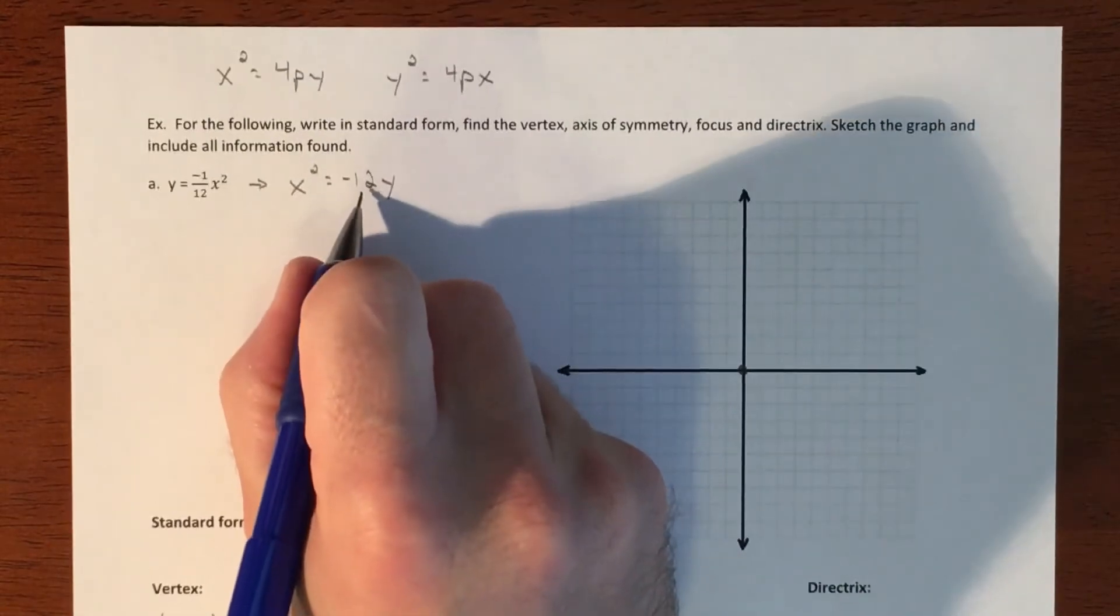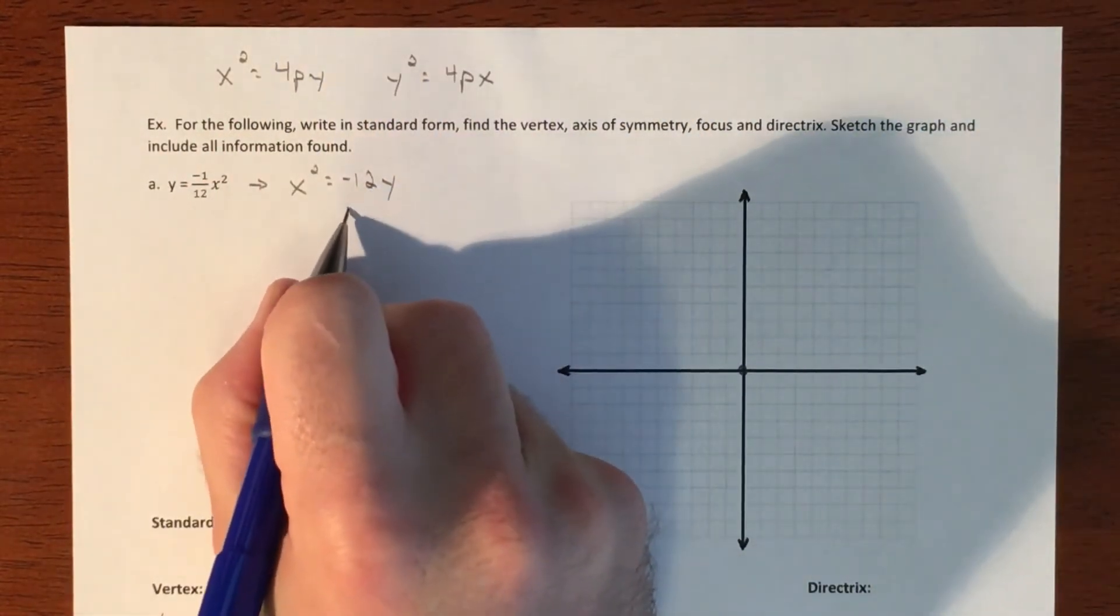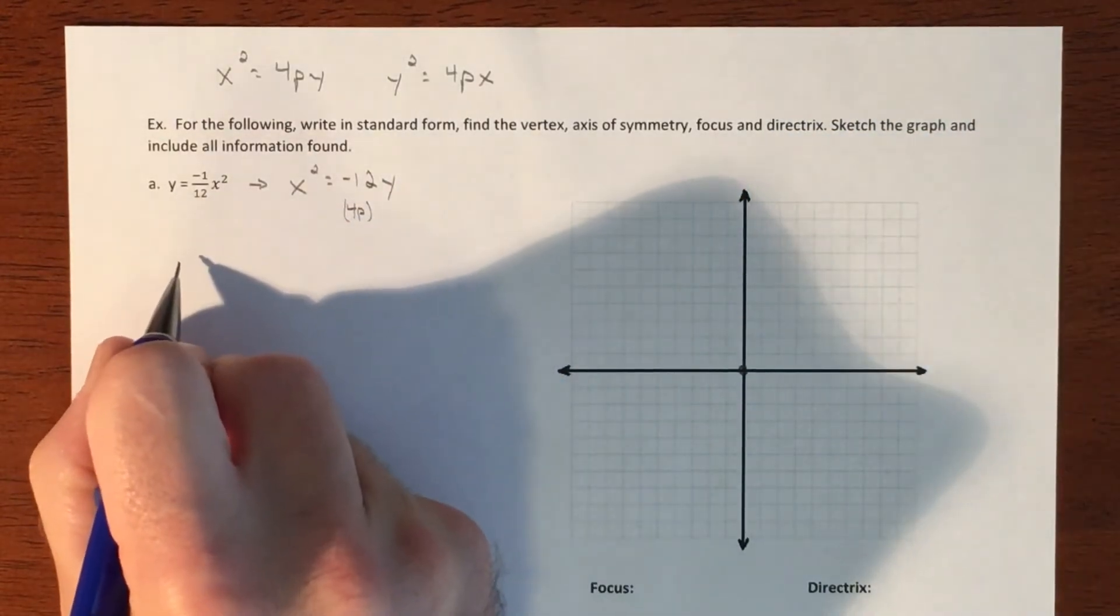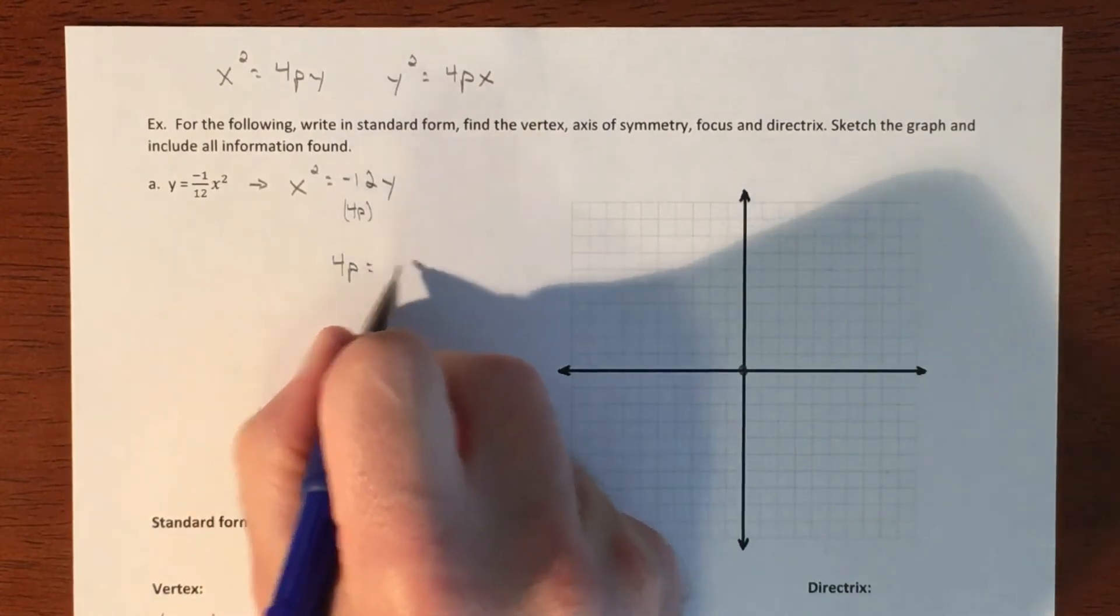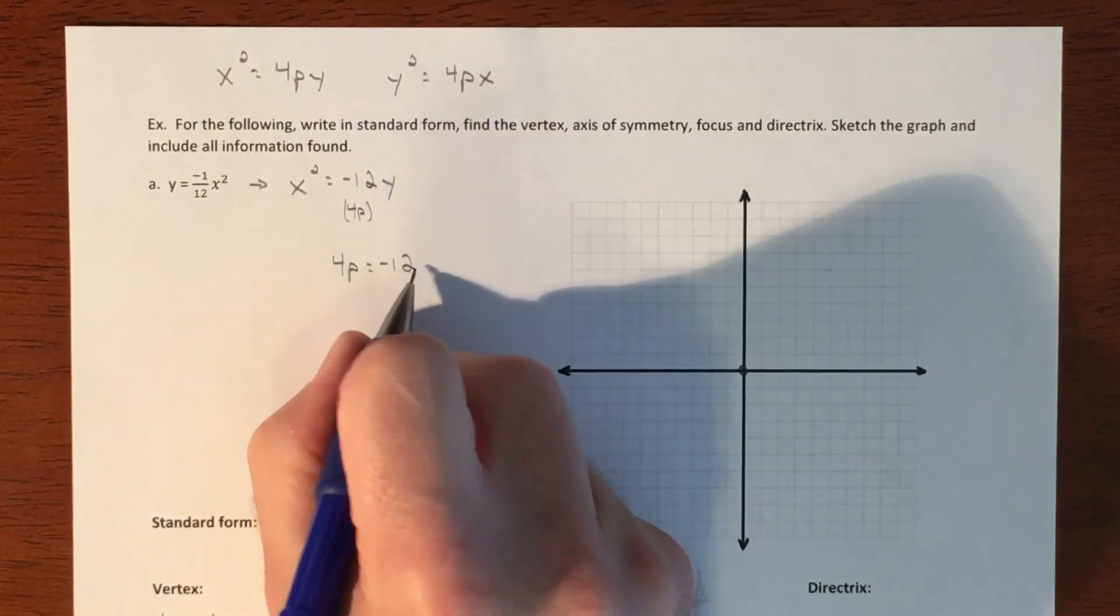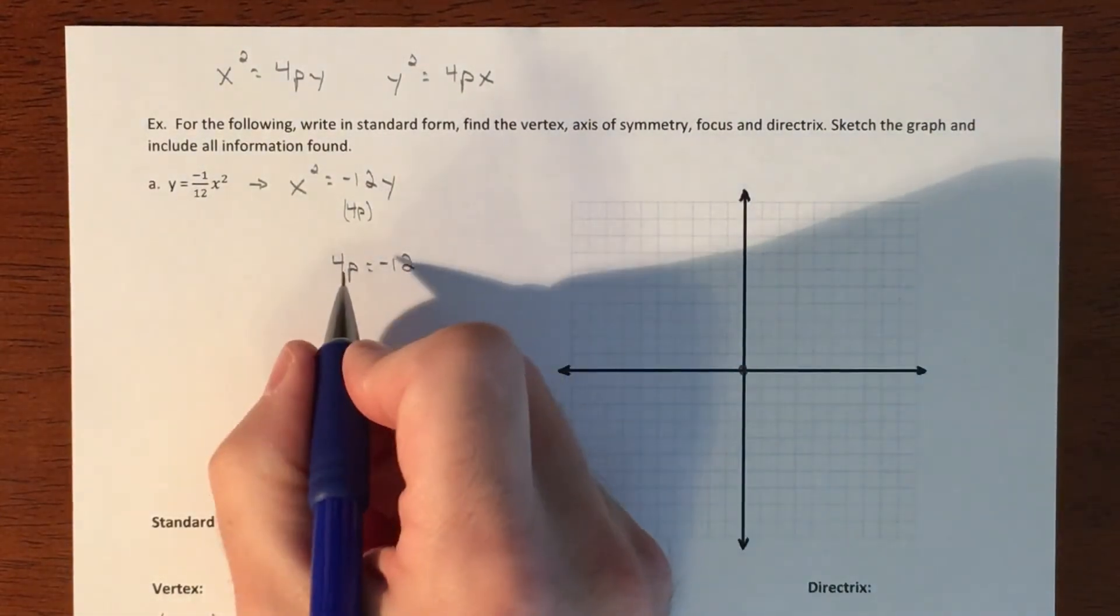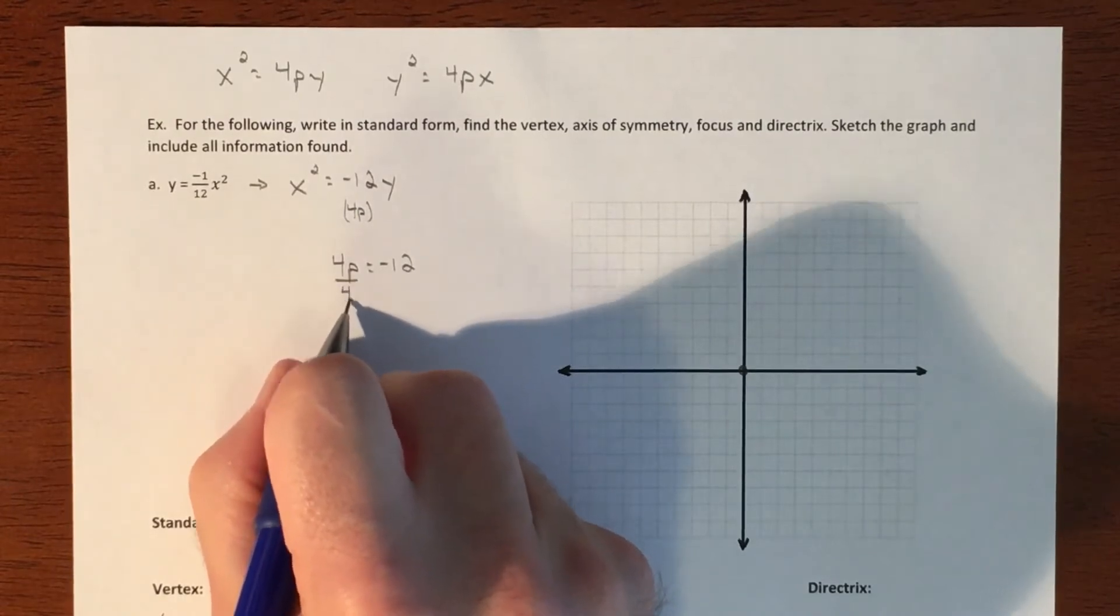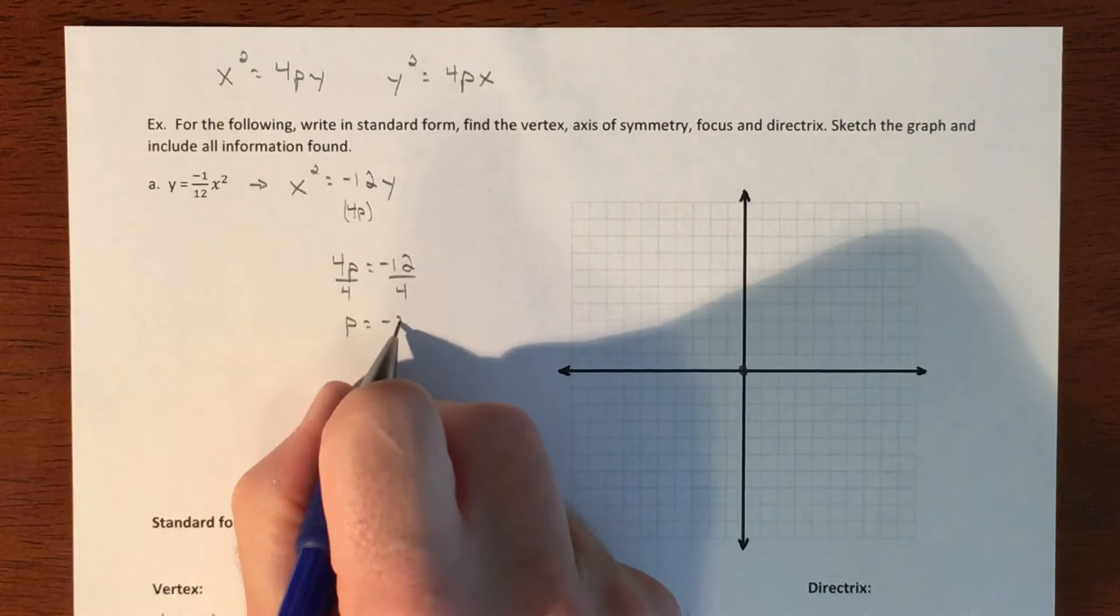Well, this is this piece. So we're going to take this. This is the 4p piece. So the way I look at it is, I'm just going to take 4p and set it equal to negative 12. And then solve for p. Because p is going to be my distance. So I'm going to divide by 4. So p is going to equal negative 3.